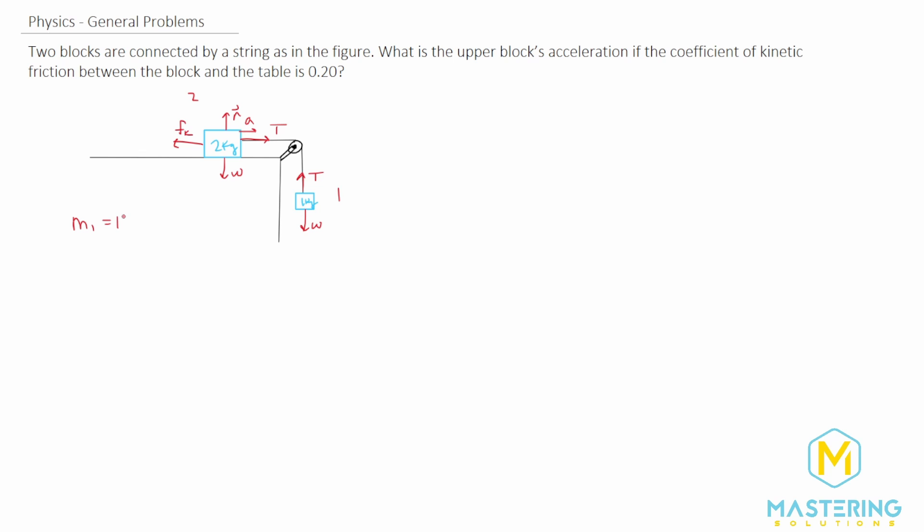So m1 is one kilogram, m2 is two kilograms, and the mu sub k for the coefficient of kinetic friction is 0.2 and there's no units for that.